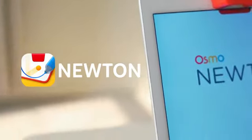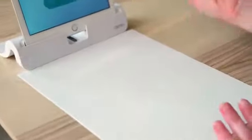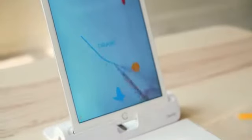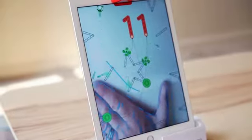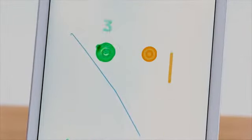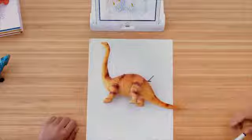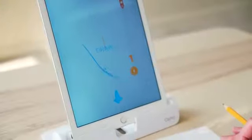So let's play! I'm going to start with Newton. Newton is a physics-based game that can be played with paper and pencil, or anything really, even my hand. Anything that can be placed in front of the iPad. My kids like to play with toy dinosaurs. You can get creative. You can use anything really.